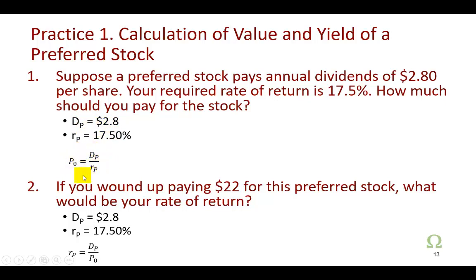And then secondly, it says if you wound up paying $22 for this preferred stock, what would be your rate of return? And again, here's your input, and here's your working formula right there.